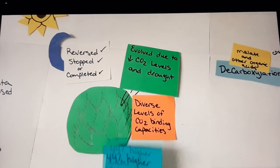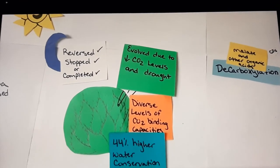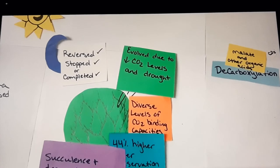CAM plants are shown to have a 44% higher water conservation than other plant types, thus allowing for succulents and drought tolerance.